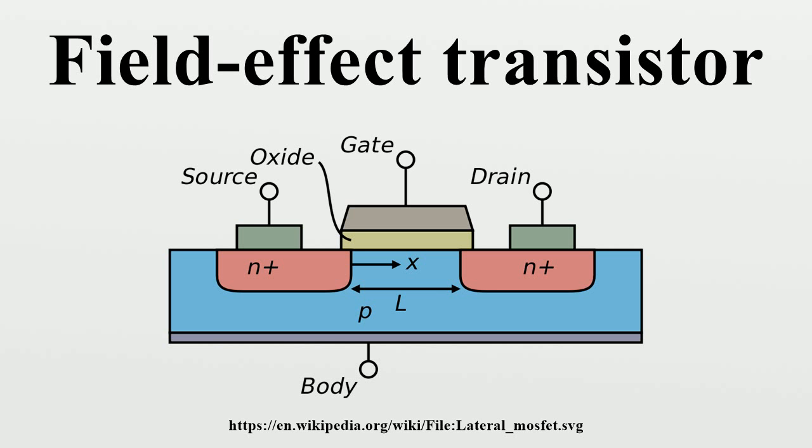FET Operation: The FET controls the flow of electrons from the source to drain by affecting the size and shape of a conductive channel created and influenced by voltage applied across the gate and source terminals. This conductive channel is the stream through which electrons flow from source to drain.